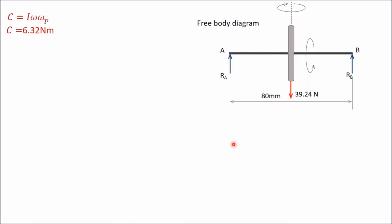The free body diagram of the disc and axle is drawn with two reactions Ra and Rb replacing the supports. However, this diagram is not complete because the system is not in equilibrium. As per D'Alembert's principle, we must apply an inertia couple to the body diagram to bring the system into equilibrium. The applied couple C = I·ω·ωp, where ω·ωp is angular acceleration.